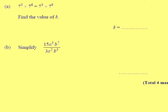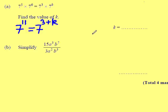7 to the power of 5 times 7 to the power of 6 equals 7 cubed times 7 to the power of K. Find the value of K. When we multiply powers we add them, and 5 add 6 is 11, which will be the same as 7 to the power of 3 plus K. The only number K can be, when I add 3 to it and get 11, is 8.